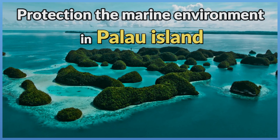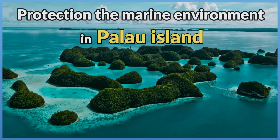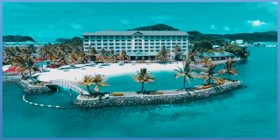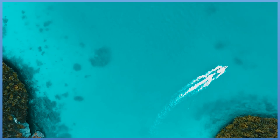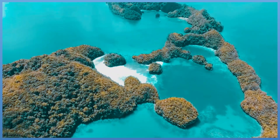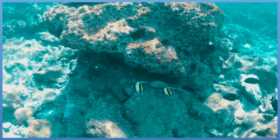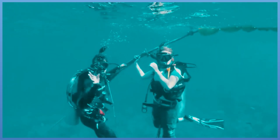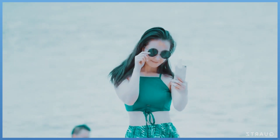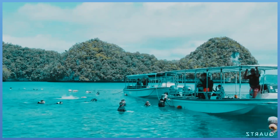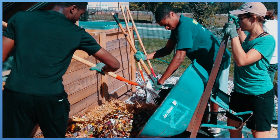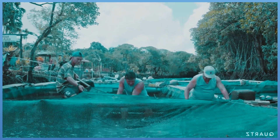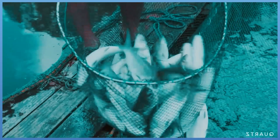Protecting the marine environment in Palau Island. On any island, we can observe that what is happening on land affects what is happening in the marine environment. People in Palau use different conservation programs to protect the marine environment by creating well-designed protected marine environments, controlling human activities on land to prevent pollution, avoiding throwing waste materials in the ocean, and ensuring fishers do not overfish the coral reefs.